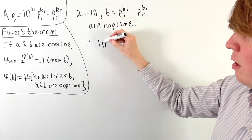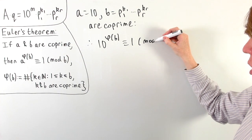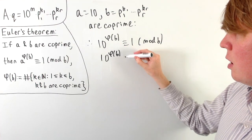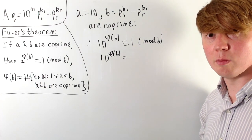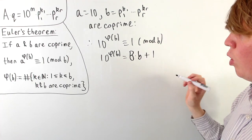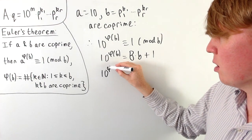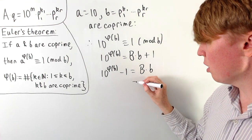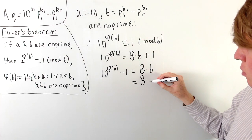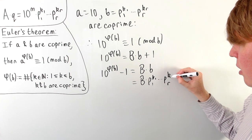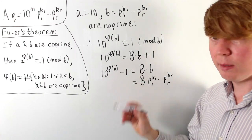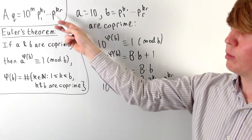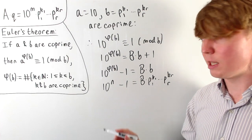We can write 10 to the power of phi of B, which is equivalent to 1 modulo B. Because it's equivalent to 1 modulo B, 10 to the power of phi of B is equal to some integer multiple of B plus 1 — we'll call this capital B times lowercase b plus 1. Subtracting 1 on both sides, we get 10 to the phi of B minus 1, which is equal to some multiple of lowercase b. So lowercase b represents all of these remaining prime factors p1 to the k1 up to pr to the kr. We can write 10 to the phi of B minus 1, and we don't care what phi of B is — we just call it 10 to the n minus 1. So having multiplied all of our remaining prime factors by capital B, we've got the form 10 to the n minus 1.